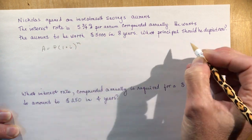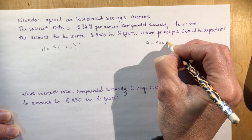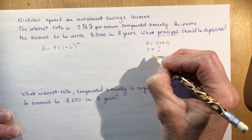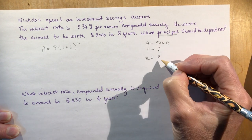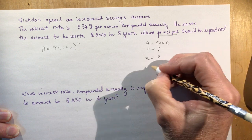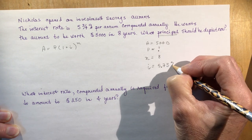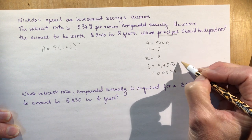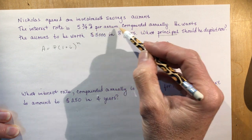Let's see what we already know. He wants the account to be worth $5,000, so that's my A. We're trying to find P — what principal should he deposit? N: compounded annually for eight years, so N equals 8. I didn't have to adjust it. If it said compounded semi-annually, my N would be 16 and I'd also have to adjust i. But because this is annual, i is 5.75% as a decimal: 0.0575.